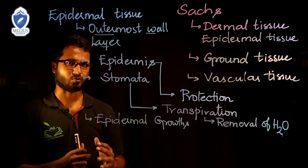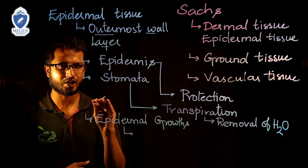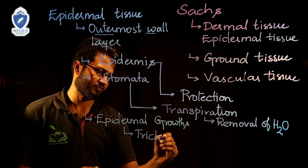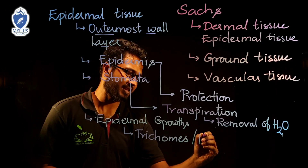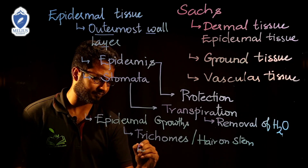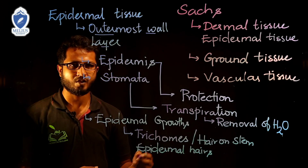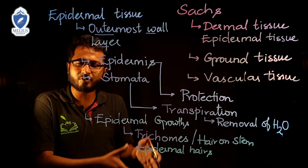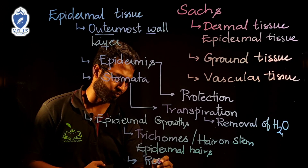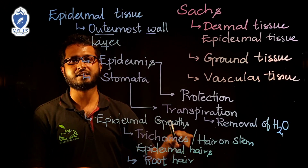These epidermal growths include minute hair-like structures on the stem. Especially in lower plants, there are white-colored hairs on the stem, called trichomes, also known as epidermal hairs. On the root, there are also hair-like structures known as root hair. Trichomes or epidermal hairs are the hair-like structures on the stem, while root hair is the hair-like structure on the root.